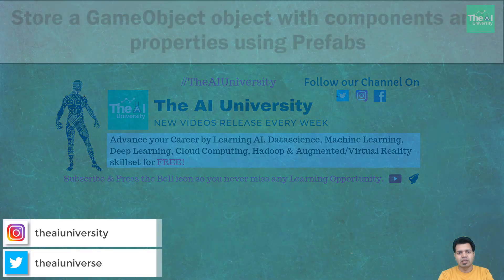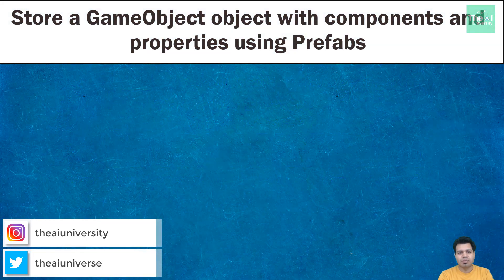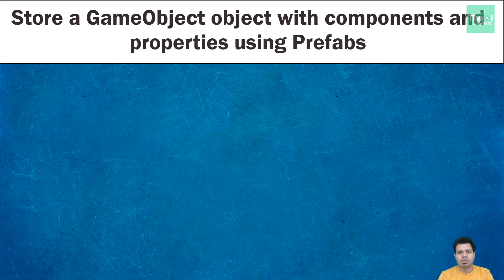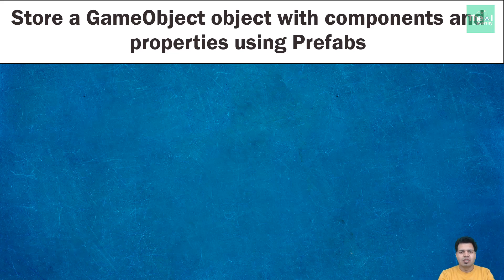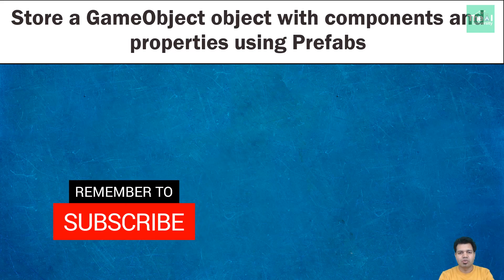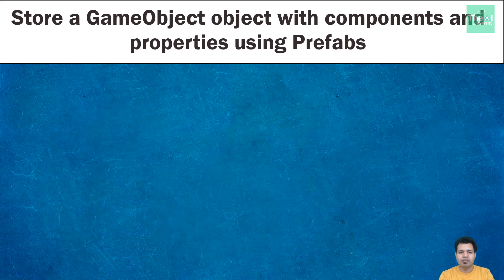In this video I am going to explain the concept of prefabs in Unity as well as how we can duplicate objects using prefabs. Using prefabs you can make changes to one game object and it will be reflected on other duplicated instances of game objects as well. Stay connected till the end of this video and consider subscribing to this channel, or if you have already subscribed, click on the bell icon to receive notifications about the hottest technologies of the 21st century.